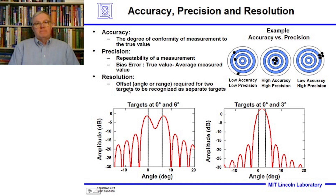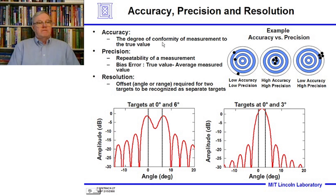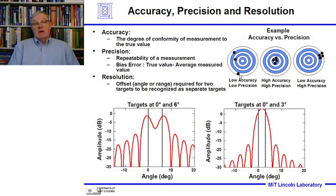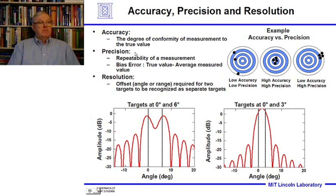I'd like to go over a couple of definitions you may hear. Accuracy is the degree of conformity of measurements to their true value. Using a bullseye analogy, you would be highly accurate if your shots hit the center of the target.